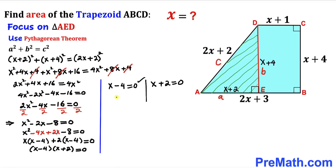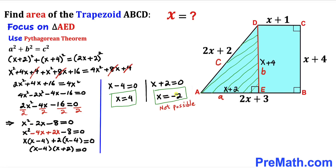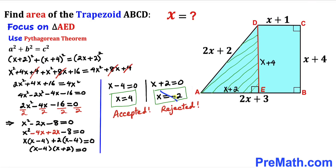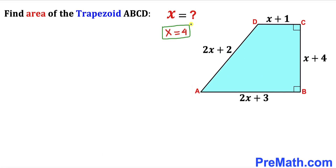From x minus 4 equals 0 we get x equals positive 4, and from x plus 2 equals 0 we get x equals negative 2. The value x equals negative 2 is not possible because substituting it gives a side length of negative 2 plus 1 equals negative 1, and side lengths cannot be negative. So we reject x equals negative 2 and accept x equals positive 4.